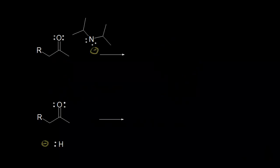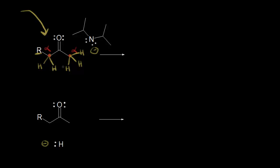We've already seen how to form enolates from ketones. What happens if you don't start with a symmetrical ketone? This ketone is not symmetrical — on the right side we have a methyl group, and on the left side of our carbonyl there's a CH2 and then an R group. Looking at our alpha carbons — the ones next to our carbonyl — on the right we have three alpha protons, and on the left we have two alpha protons. The question is which alpha protons our base will take, and the answer lies in what kind of base we use and the reaction conditions.